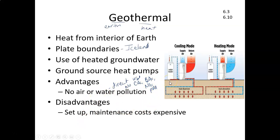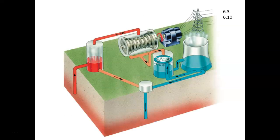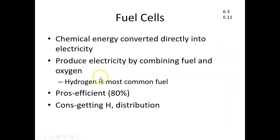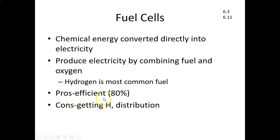The disadvantage of geothermal is that setup and maintenance can be really expensive because groundwater can have a lot of minerals that are corrosive, and it's not a fuel source usable everywhere. The final renewable energy source is fuel cells, which are starting to get more attention. With fuel cells, chemical energy is converted directly into electricity. The fuel source is traditionally hydrogen, combined with oxygen, with water as the only waste product. The pros are that it's very efficient with few conversions and little waste, but the biggest con is getting the hydrogen — we don't yet have a delivery mechanism.